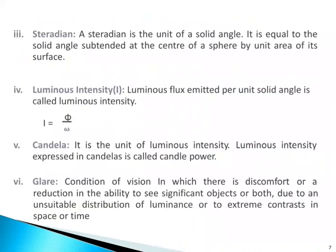Next, steradian: a steradian is the unit of solid angle, equal to the solid angle subtended at the center of a sphere by a unit area of its surface. Next, luminous intensity, denoted by capital I: luminous flux emitted per solid angle is called luminous intensity, given by phi divided by omega. Next, candela: it is the unit of luminous intensity; luminous intensity expressed in candelas is called candle power. Next, glare: a condition of vision in which there is discomfort or a reduction in the ability to see significant objects due to an unsuitable distribution of luminance or extreme contrast in space or time.